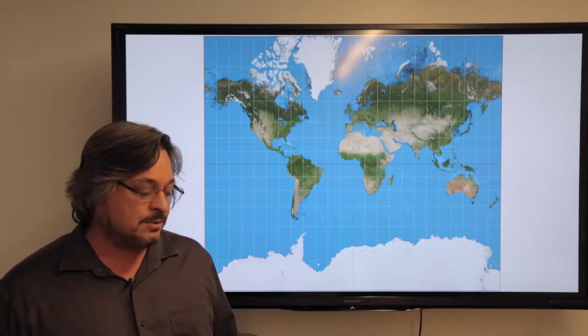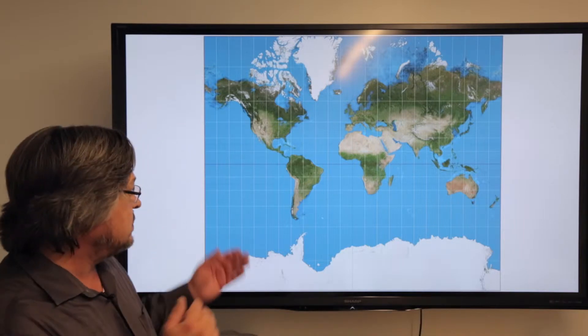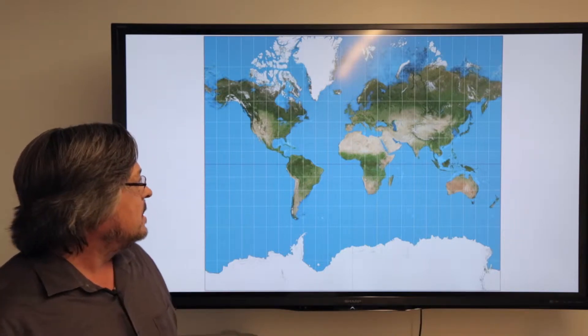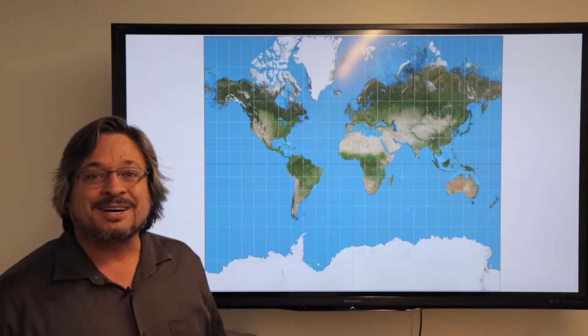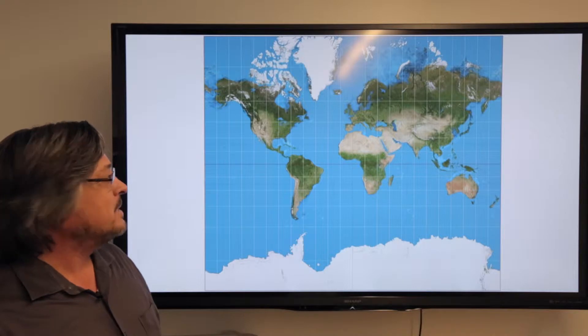I'm going to talk to you now about the Universal Transverse Mercator reference system. To start with, I thought we'd take a look at a Mercator map of the world, which is extremely well known and one that has a lot of politics on it because of the distortion that it gets.